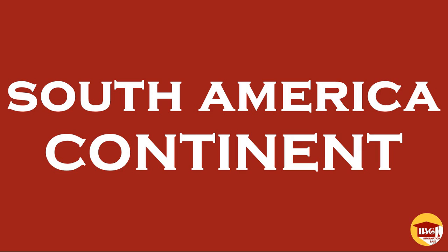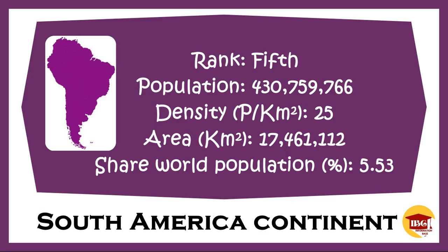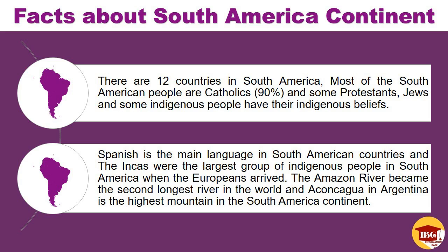Next, the continent of South America was the fifth continent in the world. The total area of South America continent was 17,461,112 km² with 25 people per square kilometer density. The population around the continent of South America was around 430,759,766 and shares the world population about 5.53%. There are 12 countries in South America; most of the South American people are Catholics, 90%, and some Protestants, Jews, and indigenous people with their indigenous beliefs. Spanish is the main language in South American countries, and the Incas were the largest group of indigenous people in South America when the Europeans arrived. The Amazon River is the second longest river in the world, and Aconcagua in Argentina is the highest mountain in South America.